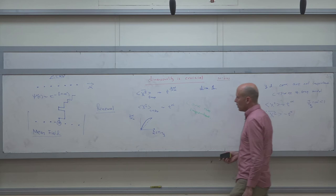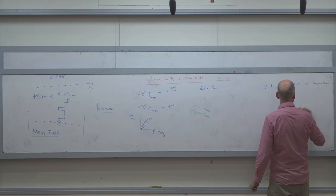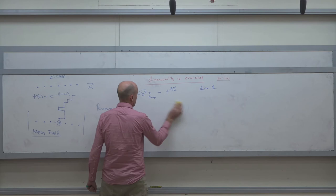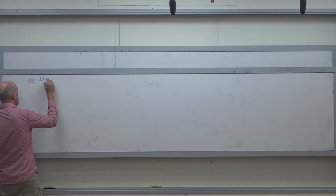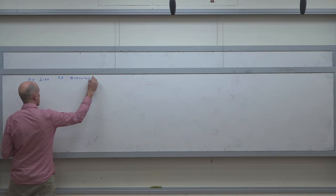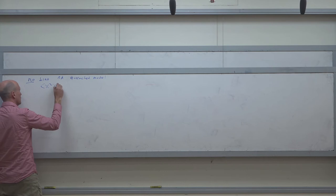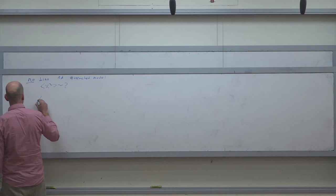Now I want to hand-wavingly prove the different exponent in 1D. This is a physicist's proof — not a proof at all, but better than what mathematicians can do because they can't prove it either. We analyze the quenched model in 1D with no bias and want to find the MSD, averaged over disorder and thermal paths, in the long-time limit.